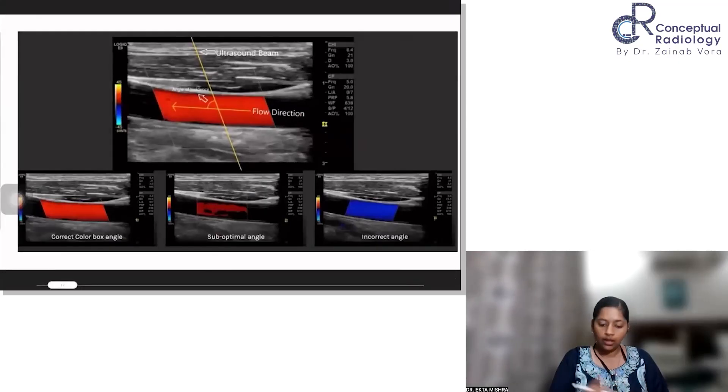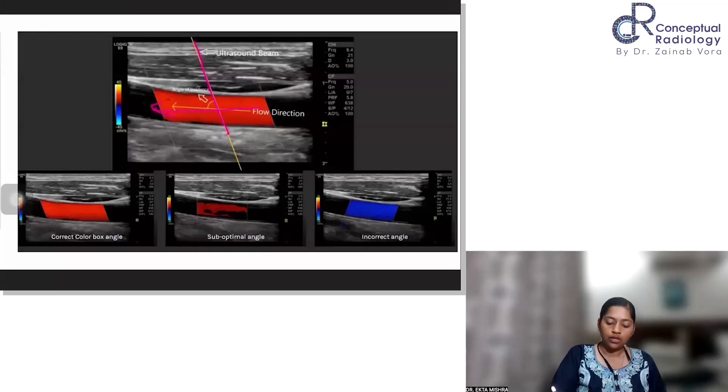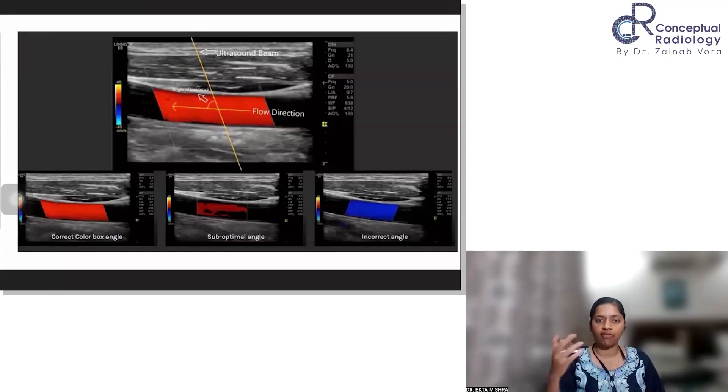This was for curvilinear. For linear probes, see this is the ultrasound beam and this is the direction of flow. So the angle between them is the Doppler angle. So what you can do is you can adjust this angle by two things. First is you can adjust the angle by angle correction. That will come into play once you're steering and everything has been done and still you want to optimize the flow. So when the color box angle is correct, you get complete filling of the vessel.